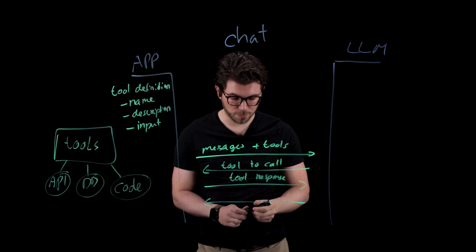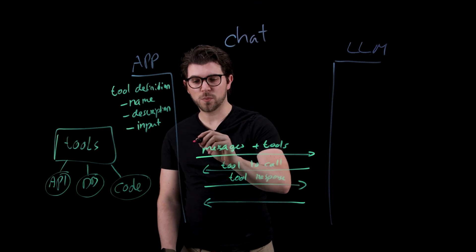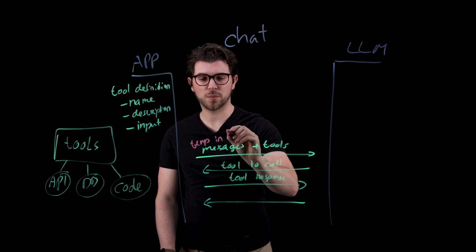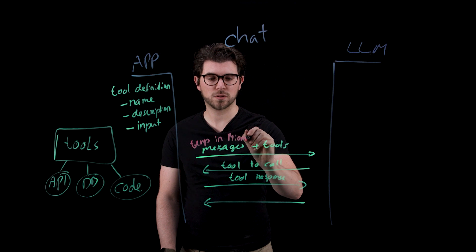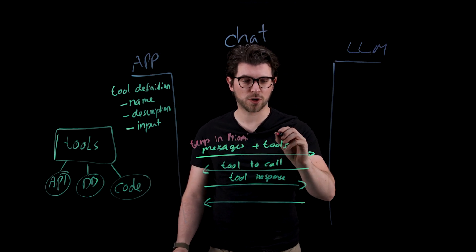So let's look at an example. Assume you want to find the weather in Miami. You might ask the LLM about the temperature in Miami. You also provide a list of tools and one of these tools is the weather API.